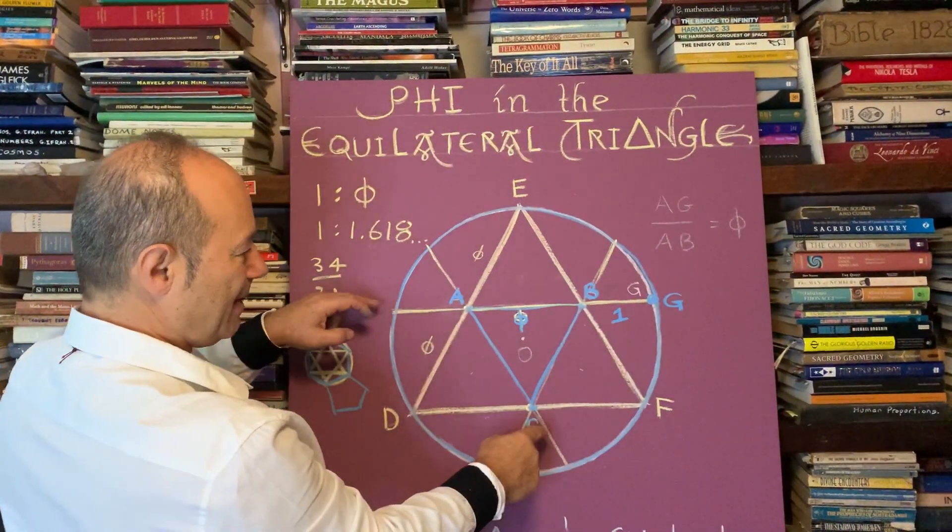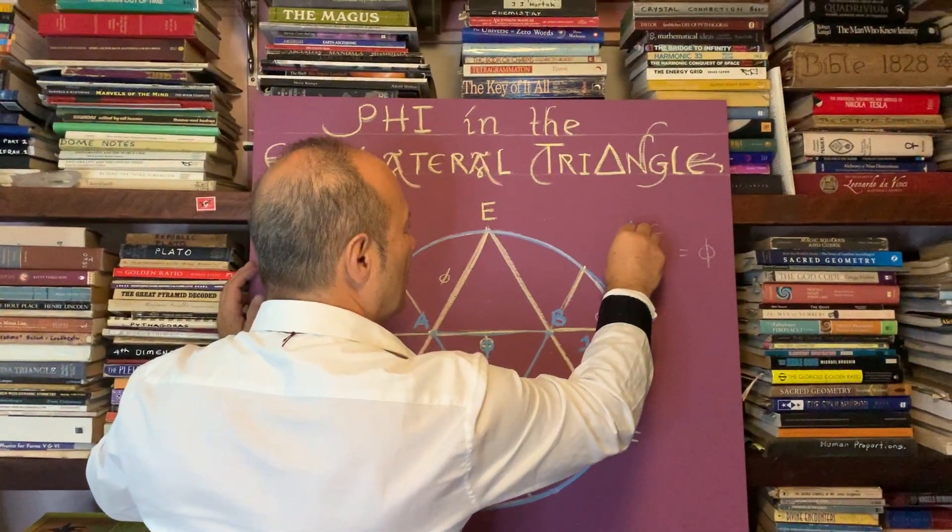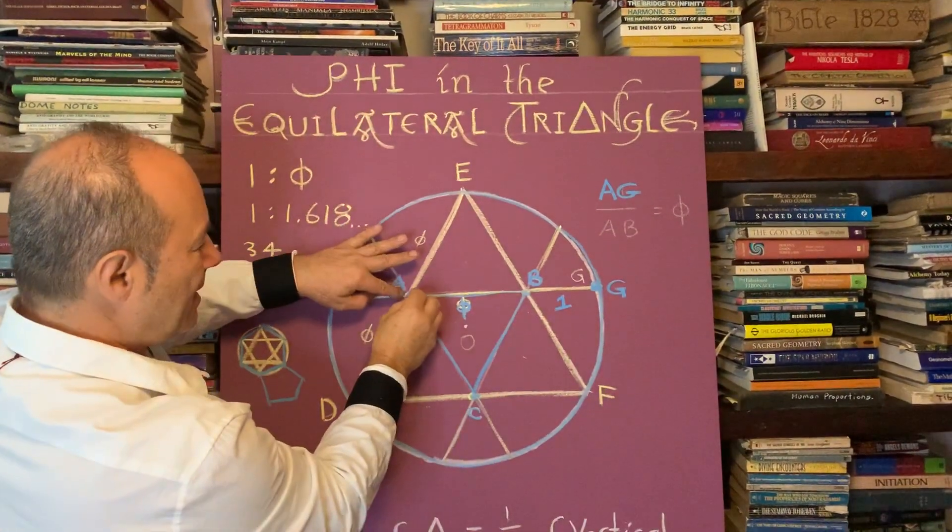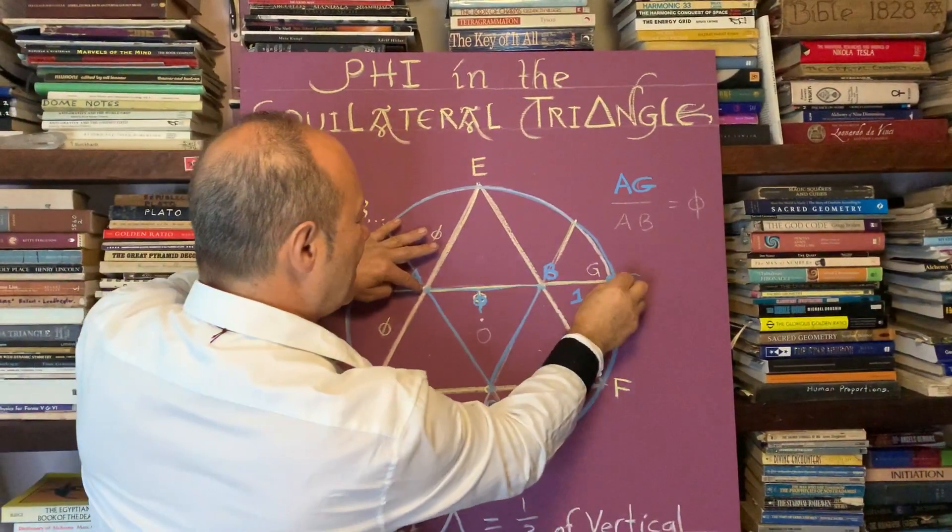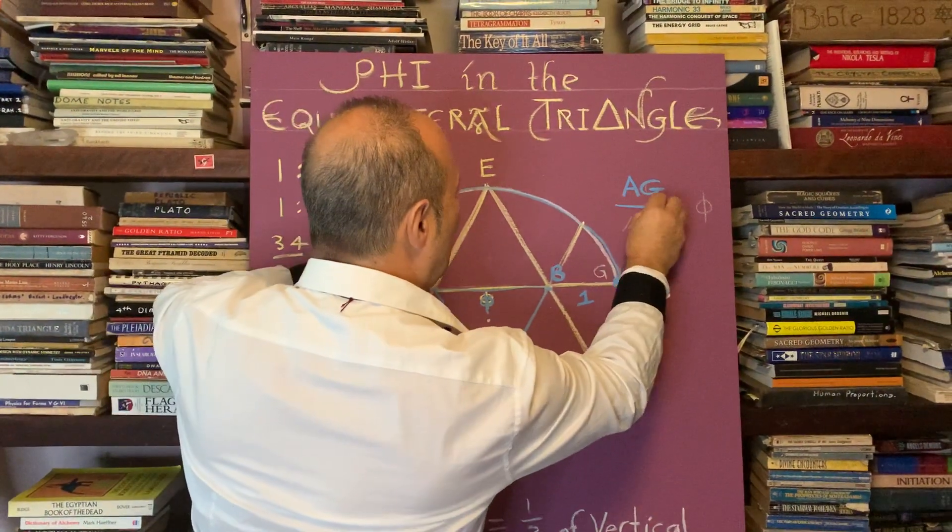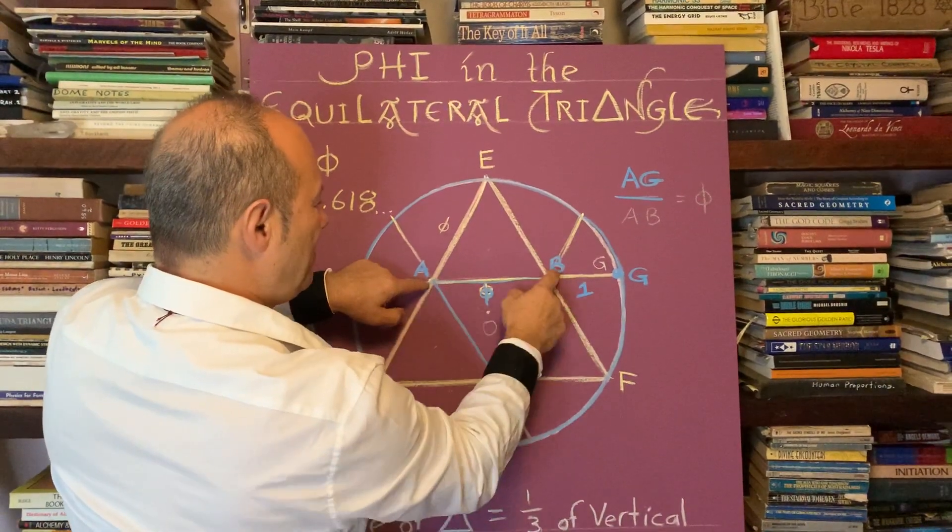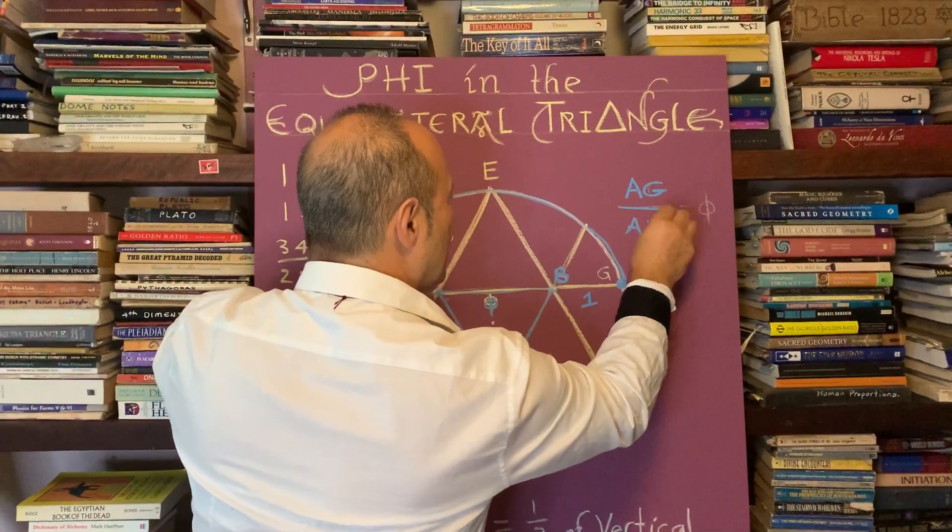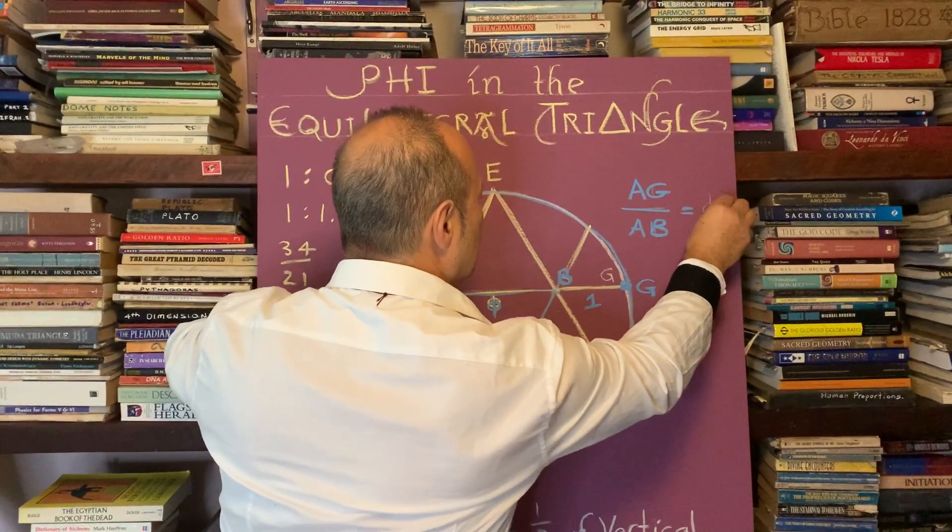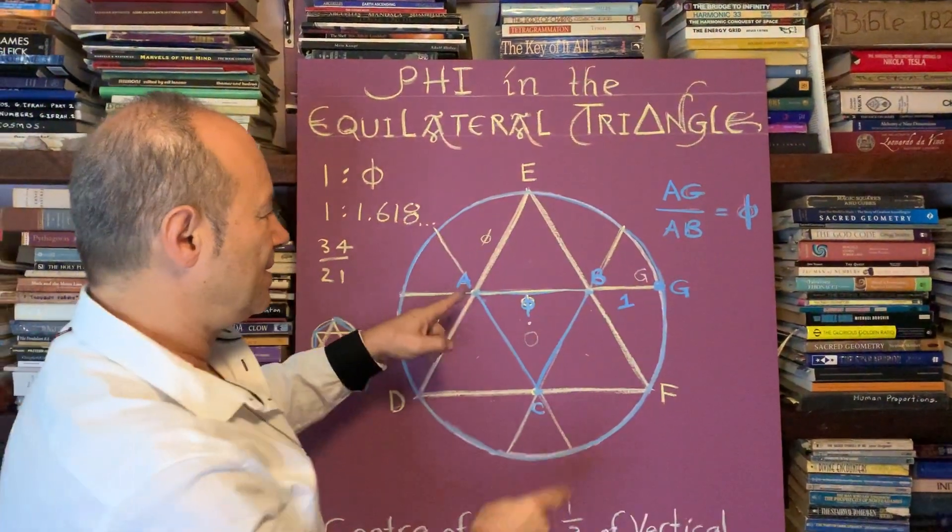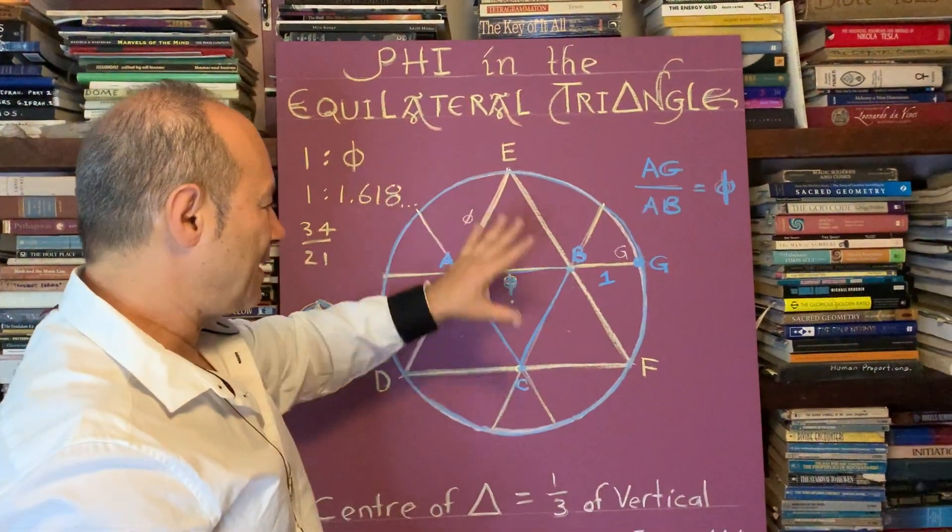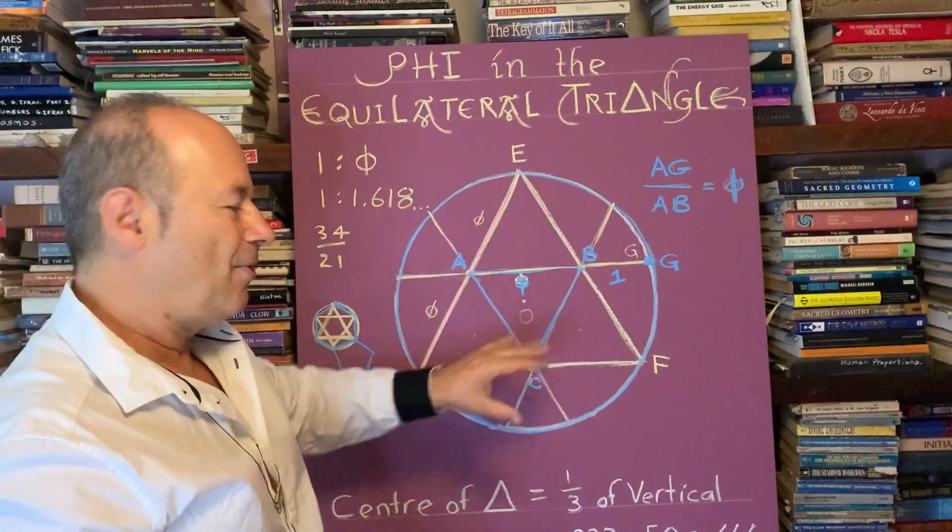Just before I complete, what I'd like to do is complete the golden ratio here. We can conclude and say that the distance of AG, from this midpoint to the circumference AG, divided by AB, this distance here, equals phi. So that's the conclusion: that distance divided by this distance is 1.618, and it extends or permeates all the way through.